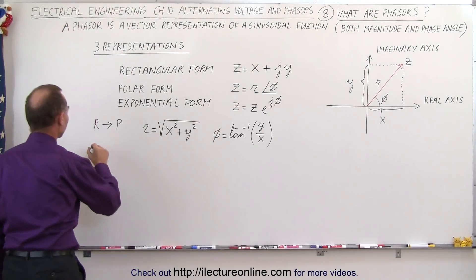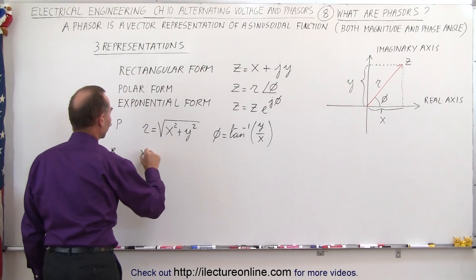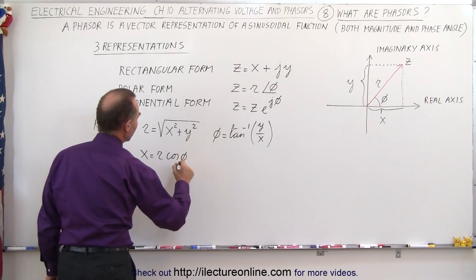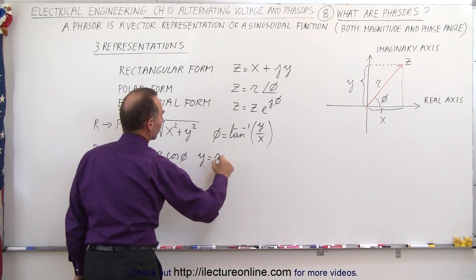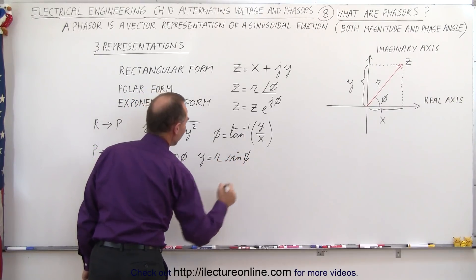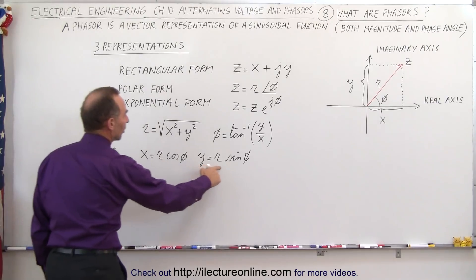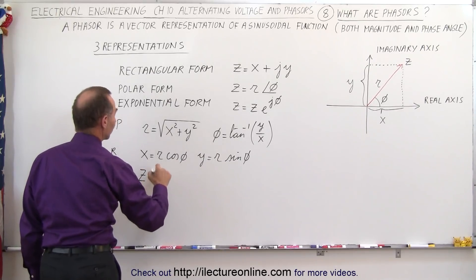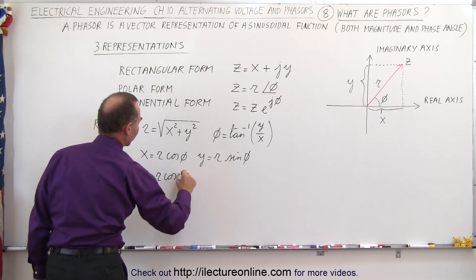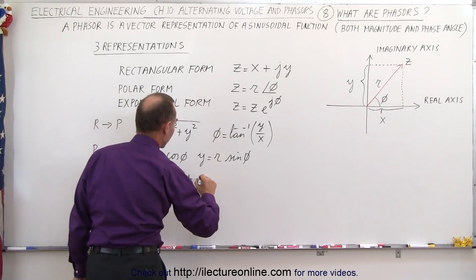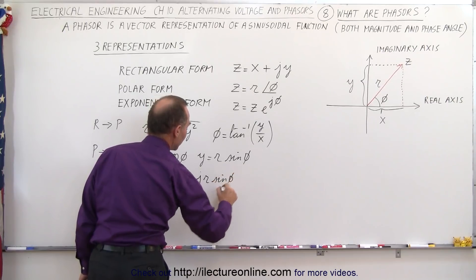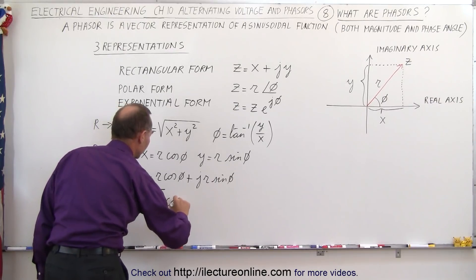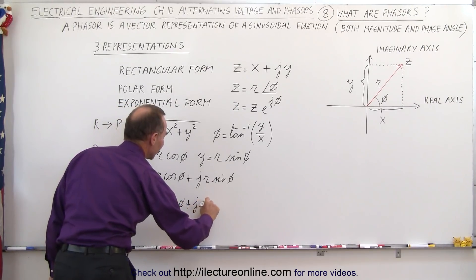To go from polar to rectangular: x equals the magnitude R times the cosine of phi, and y equals the magnitude R times the sine of phi. Writing z as the sum of those components, z equals x plus jy, which becomes R times cosine of phi plus j times R times sine of phi. Factoring out R, we get z equals R times the quantity cosine of phi plus j times sine of phi.